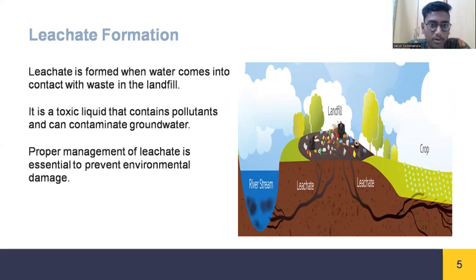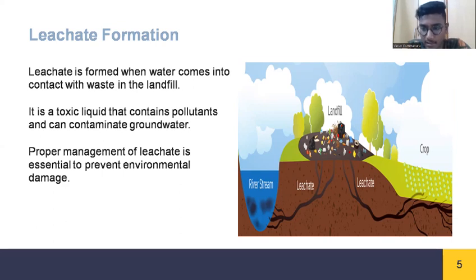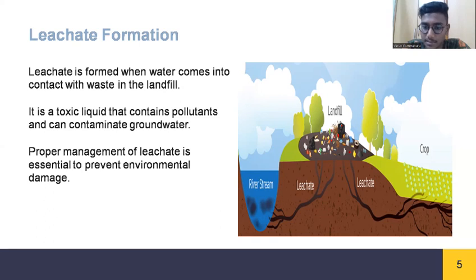Leachate is formed when water comes into contact with waste in a landfill. It is a liquid generated from rainfall and the natural decomposition of waste, filtered through the landfill to a leachate collection system. The leachate collection system directs leachate to collection sumps so it can be properly removed from the landfill. The system is designed with a minimum two percent slope to drain to the collection sumps.